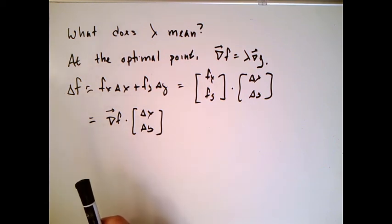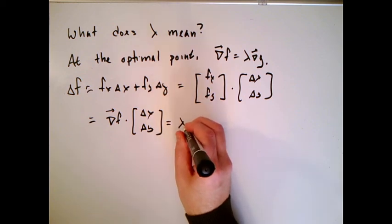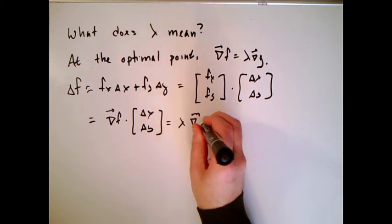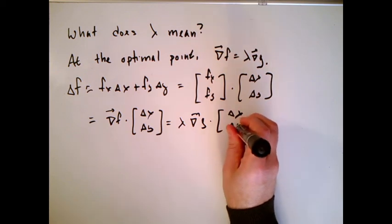So at the optimal point, we know that instead of the gradient of f, we can put lambda gradient g. So I'm going to do that. I'm going to put down lambda and then gradient g like this, and this is still being dotted with delta x, delta y.